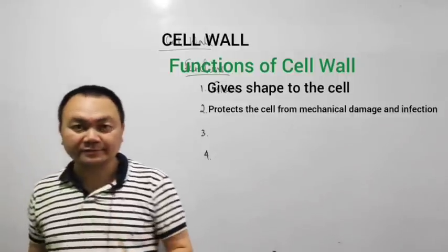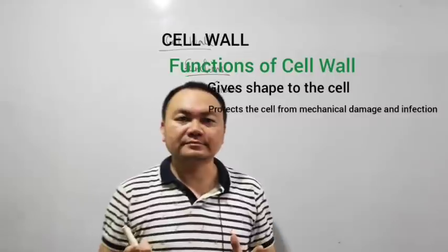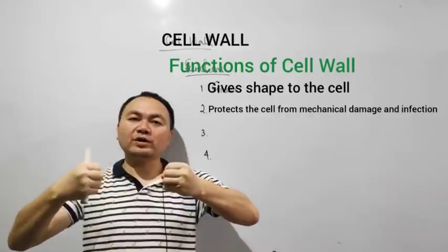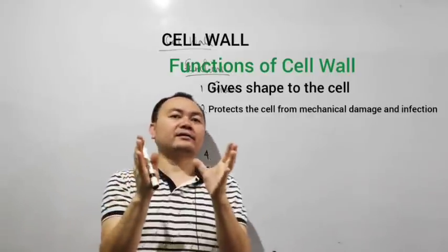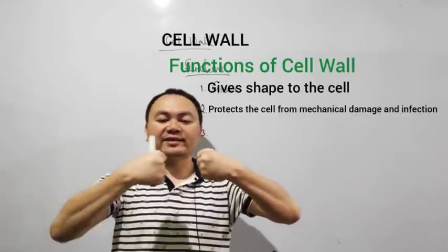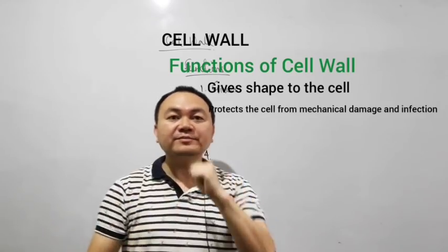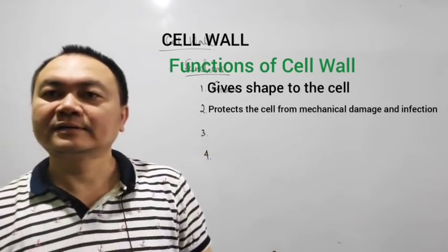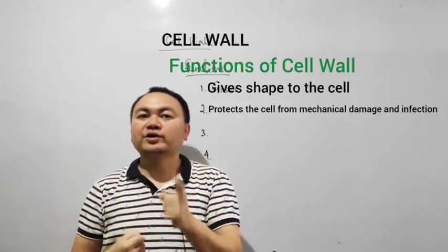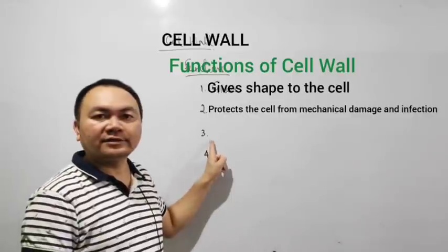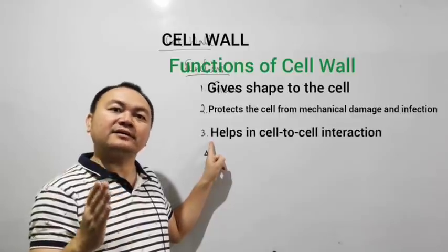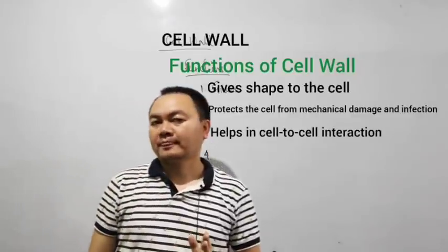Do not forget, in a multicellular organism there are many cells interacting with one another and lying beside each other. Now one cell and the next cell, there's an interaction between the cells. This cell interaction is also held by the cell wall. That is the third function, which is it helps in cell-to-cell interaction.